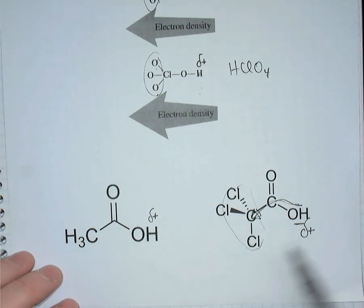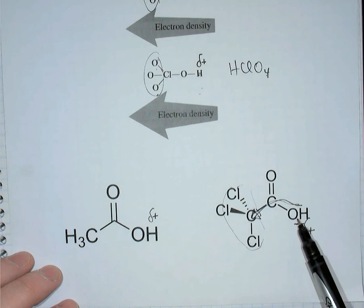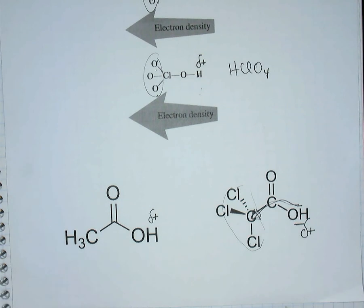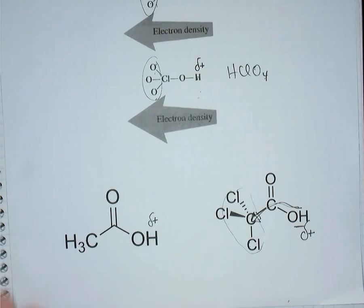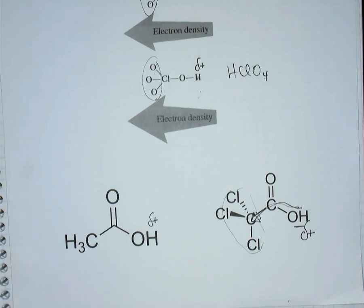So trichloroacetic acid is a much stronger acid than acetic acid. Those are some of the factors related to structure within acids as they influence the strength of acids.